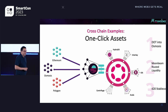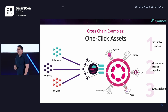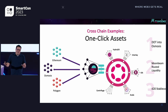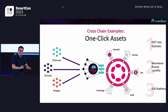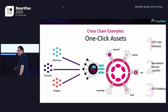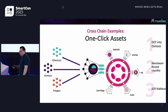The same scenario happens in reverse with something called Moonbeam routed liquidity — you might be on mainnet with ETH and one-click deposit it to another chain on Polkadot. Behind the scenes it transits via GMP to Moonbeam, then gets rerouted onwards via XCM to its final destination. You see the combination of two different GMP providers and two different cross-chain interoperability protocols tied together to create an overarching scenario — something we'll see more of as these enclaves of interconnected chains continue to evolve.